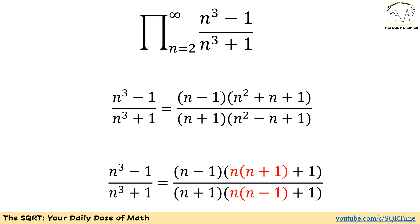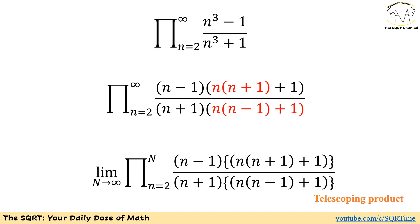The goal is to write it as a telescoping product. To do this, we are going to factor out n from the second terms in the numerator and denominator, and then we will end up with the simplified form. Now instead of saying the product is from n equals 2 to infinity, we are going to say the product is between 2 and n, considering where n is moving towards infinity, and we are going to find the limit of this expression as n moves towards infinity.